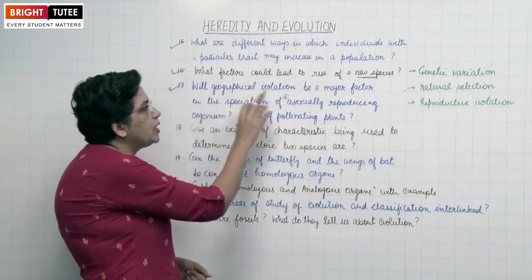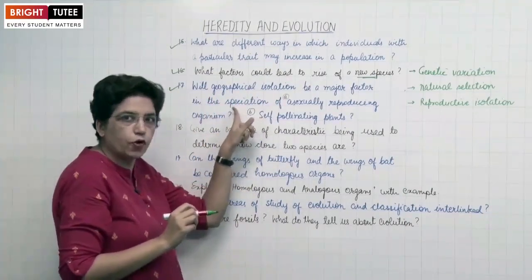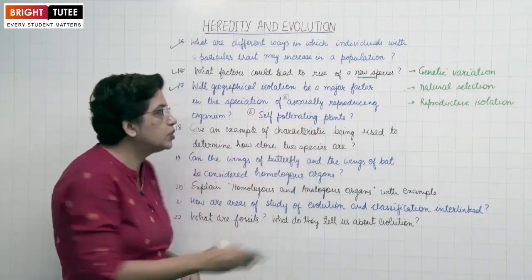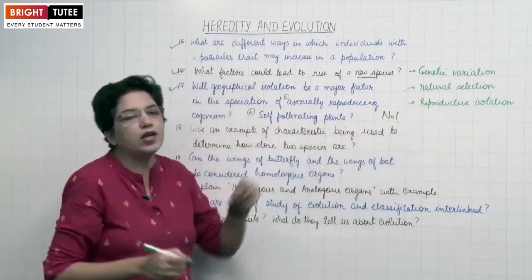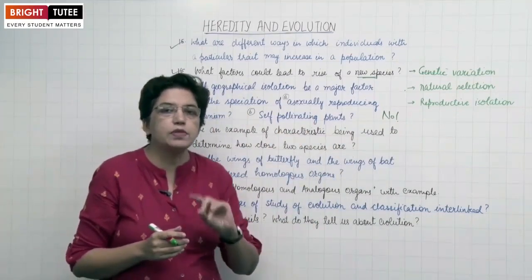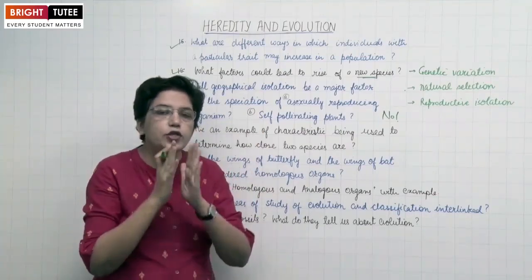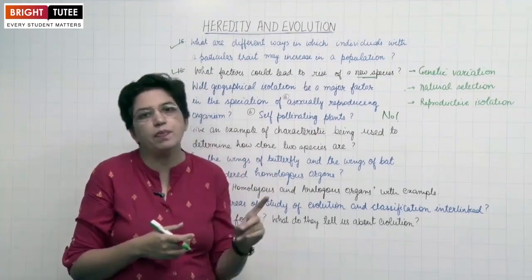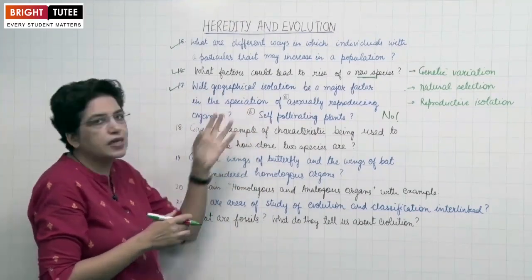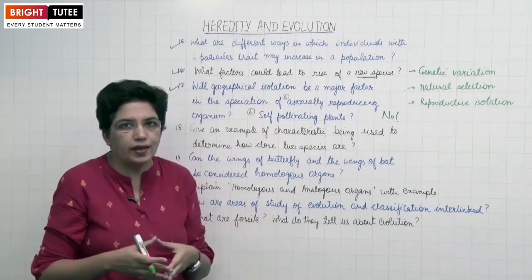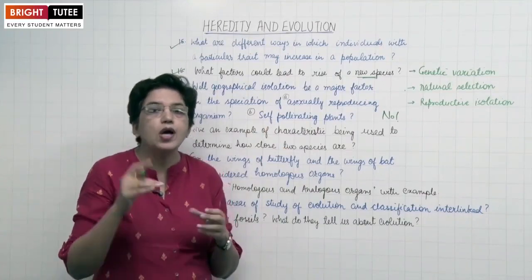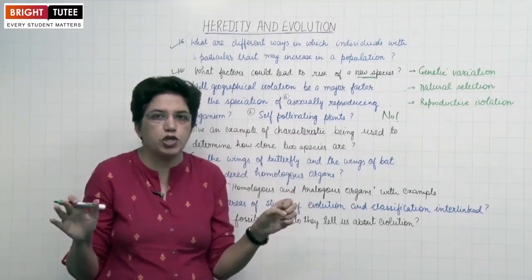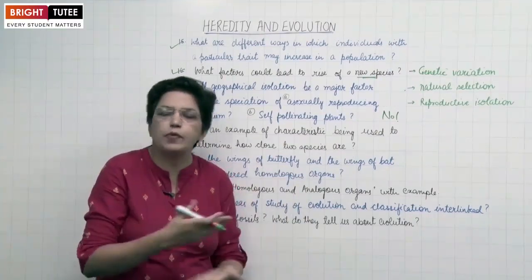Next question: Will geographical isolation be a major factor in speciation for asexually reproducing organisms or self-pollinating plants? The answer is no. In asexually reproducing organisms, new organisms are formed from a single parent, so even if they are geographically isolated, they will keep reproducing on their own — we will not notice formation of new species. Similarly, in self-pollinating plants, since they can survive without cross-pollination, geographically isolating two species will not lead to formation of new species because two parents are not required in either case.